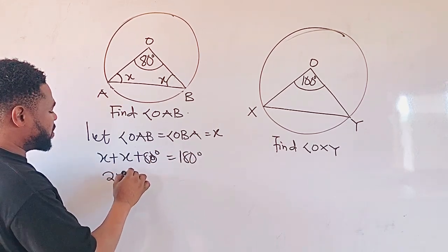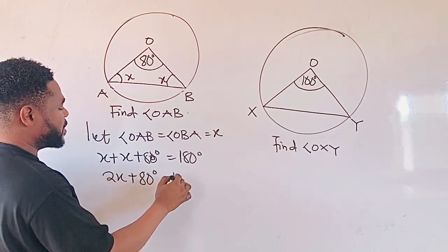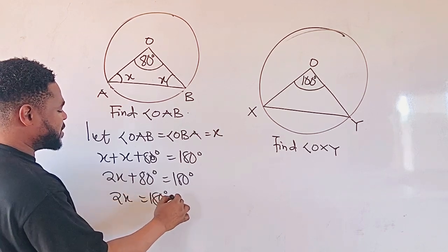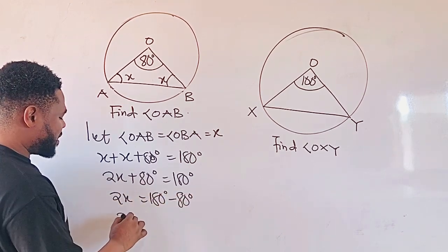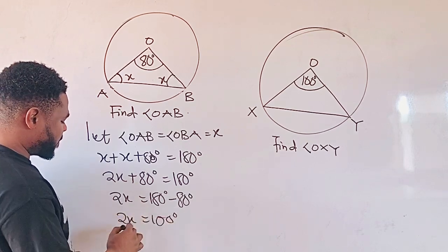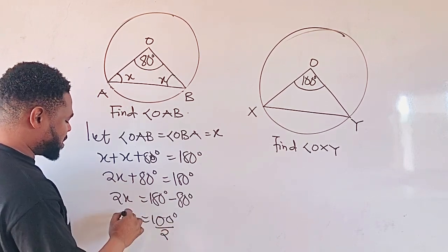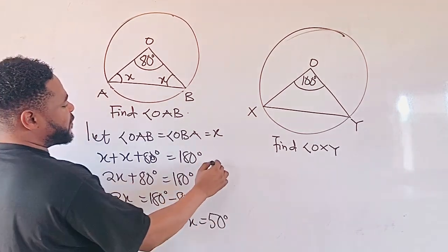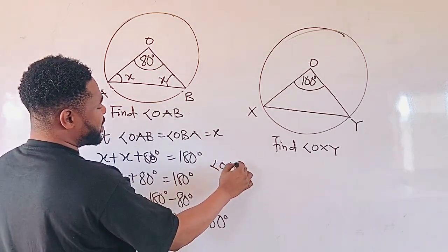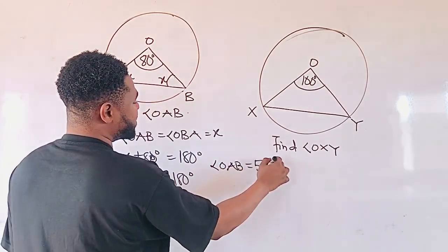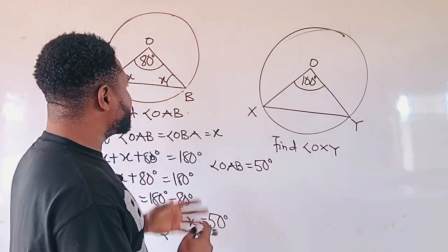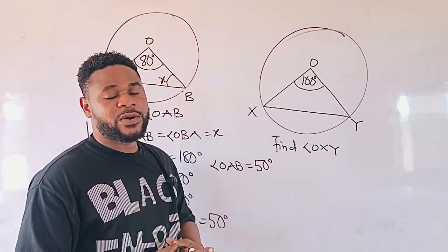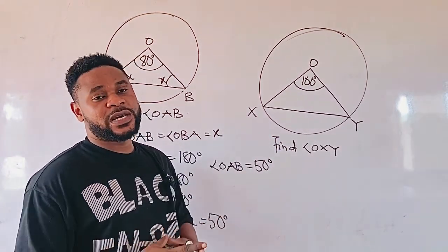We simplify this as 2X plus 80 equals 180. We have 2X equal to 180 minus 80, so 2X equals 100. We divide both sides by 2 so that we can get X, and X is going to be 50 degrees. Therefore, we can say that angle OAB is equal to 50 degrees. Use the same concept to find angle OXY and leave your answer in the comment section.